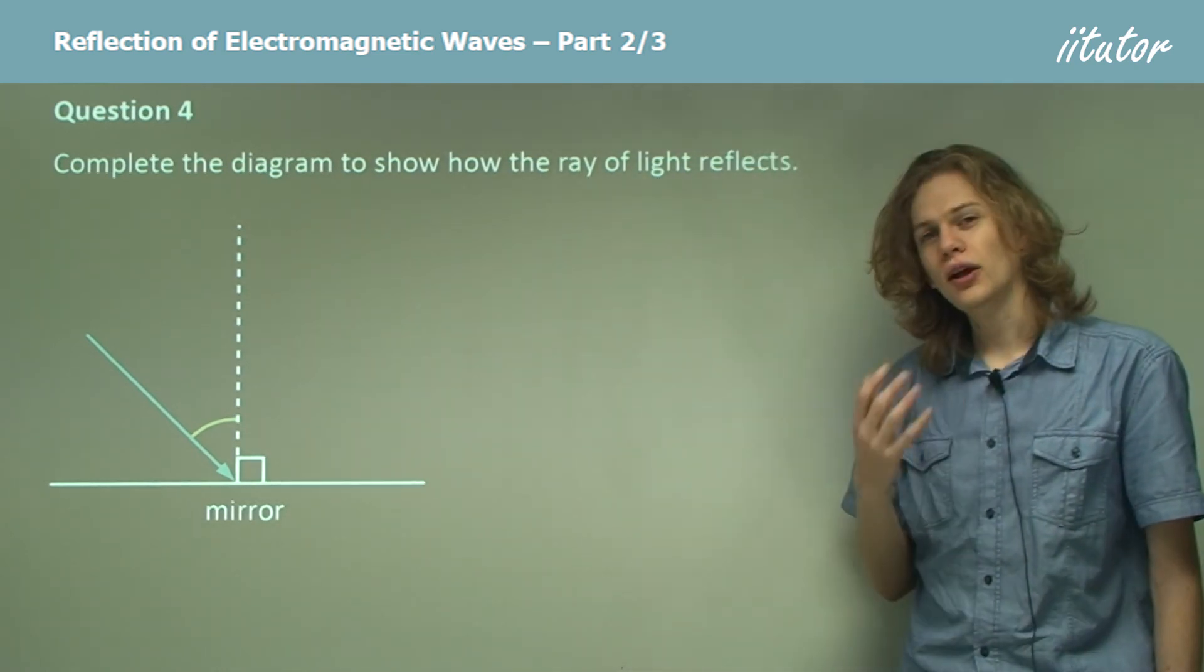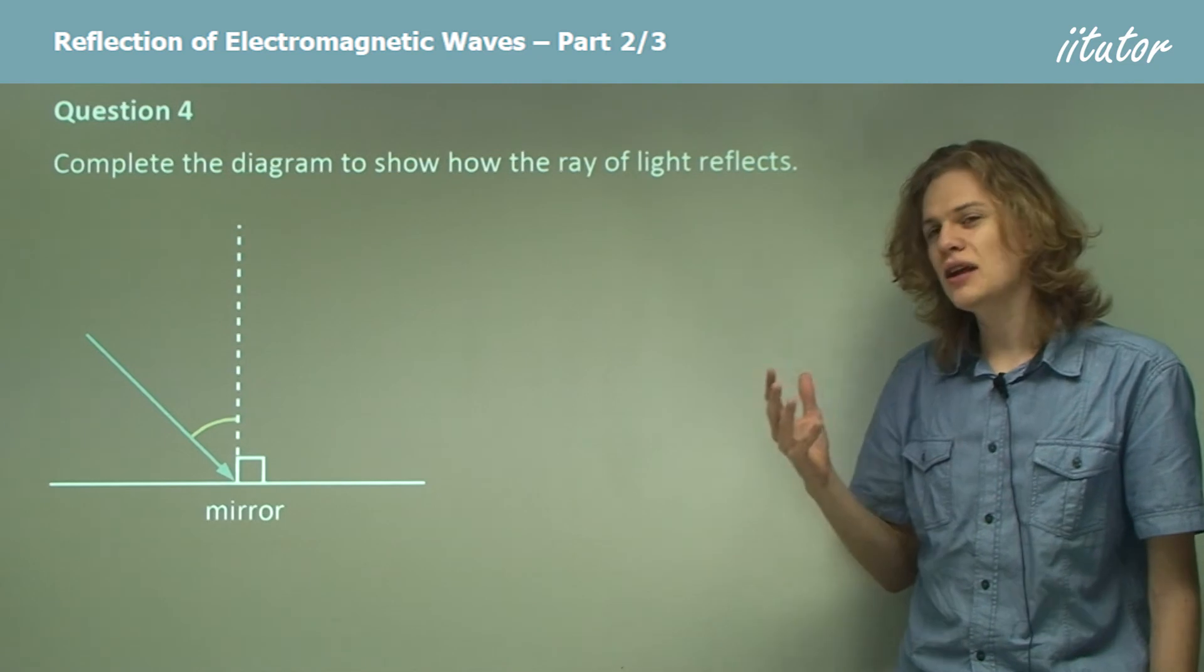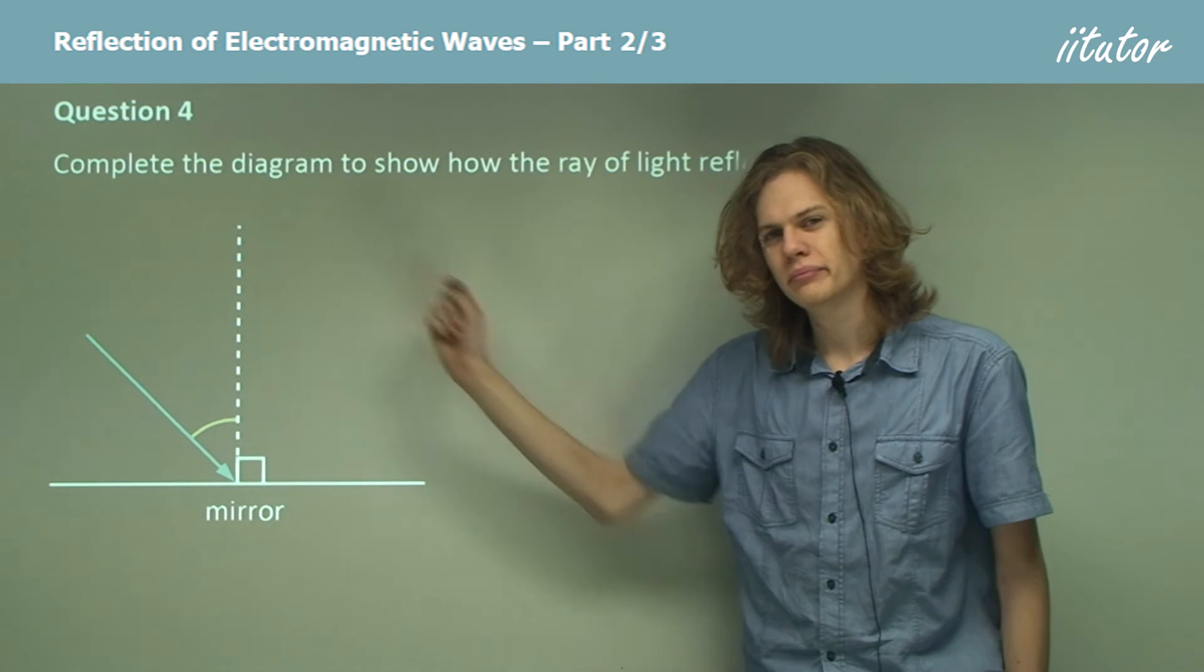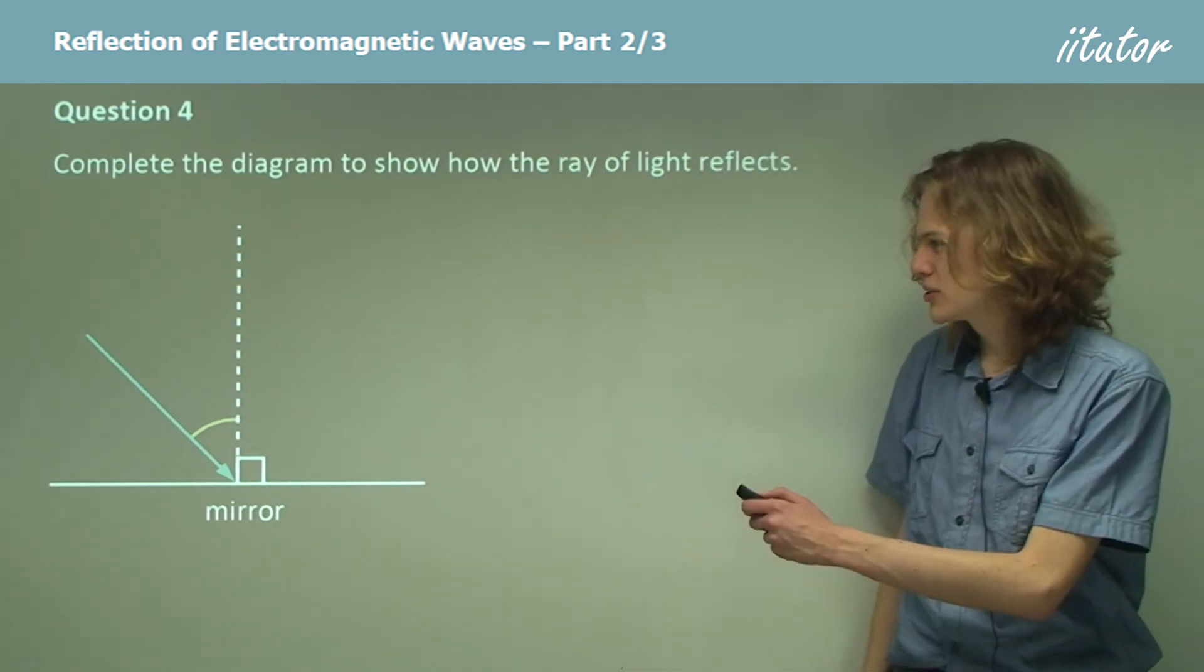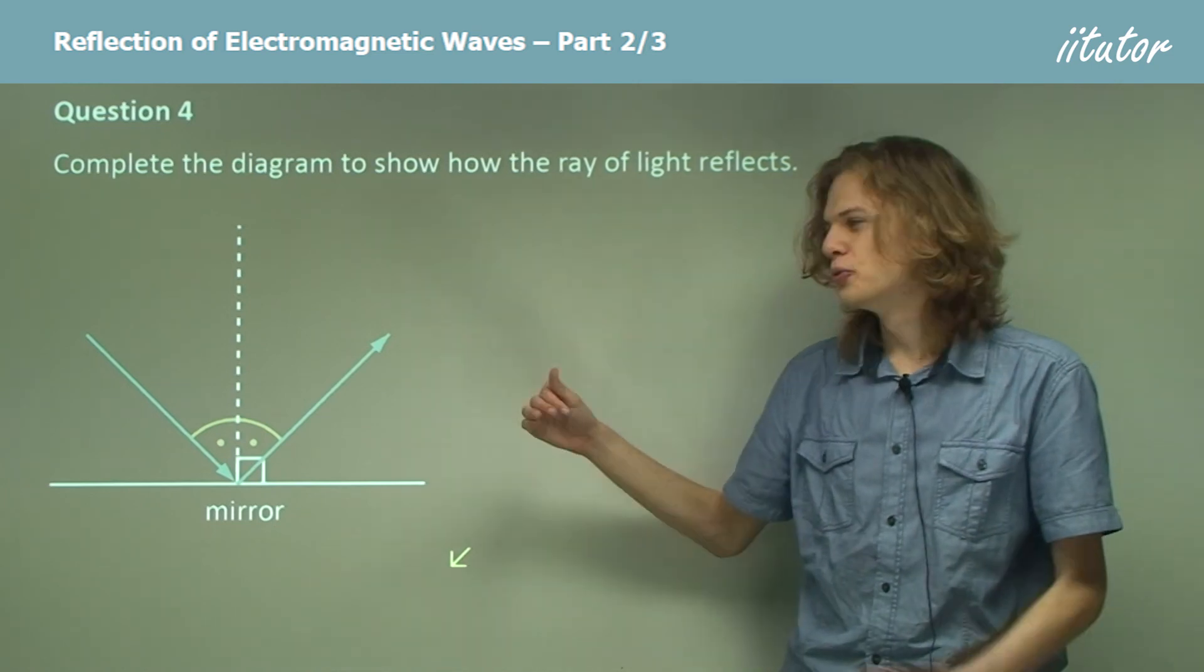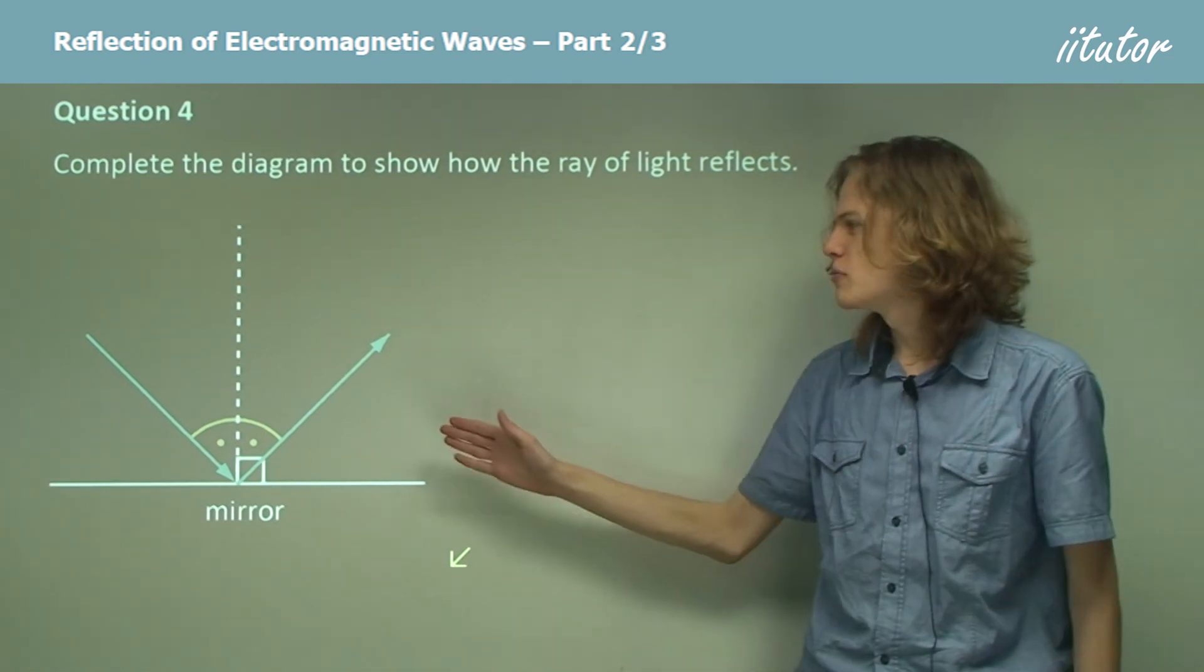So the reflected ray will need to have the same angle between the ray and the normal. So it should look something like this. And that's our answer. That's how the ray of reflected light moves away from the mirror.